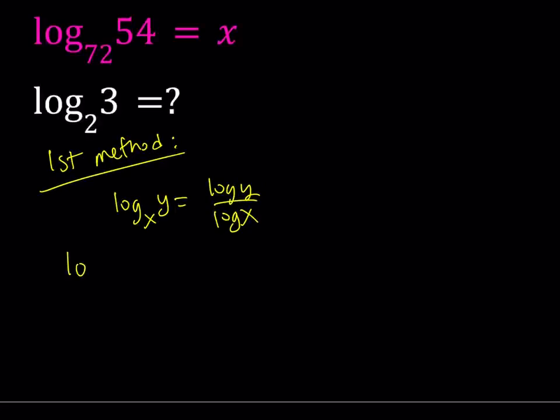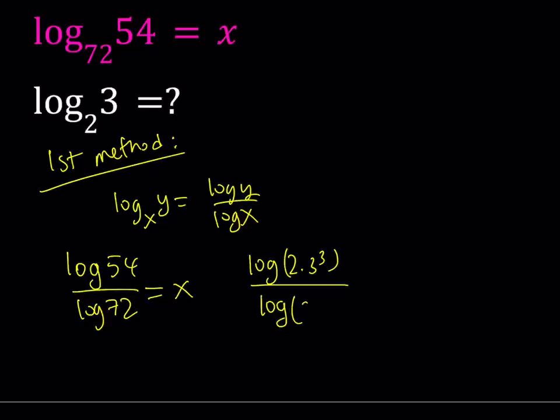So I'm going to write my expression as log 54 divided by log 72 and we know that it's equal to x. Now I can factor 54 as 9 times 6 and 6 can be written as 2 times 3 so that is basically 2 times 3 to the 3rd power. And then 72 can be written as 8 times 9 which is 2 to the 3rd power times 3 squared.